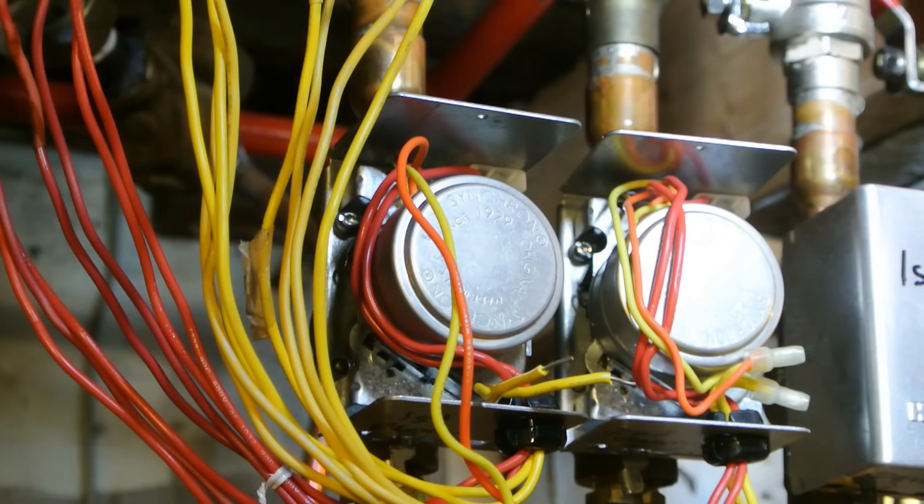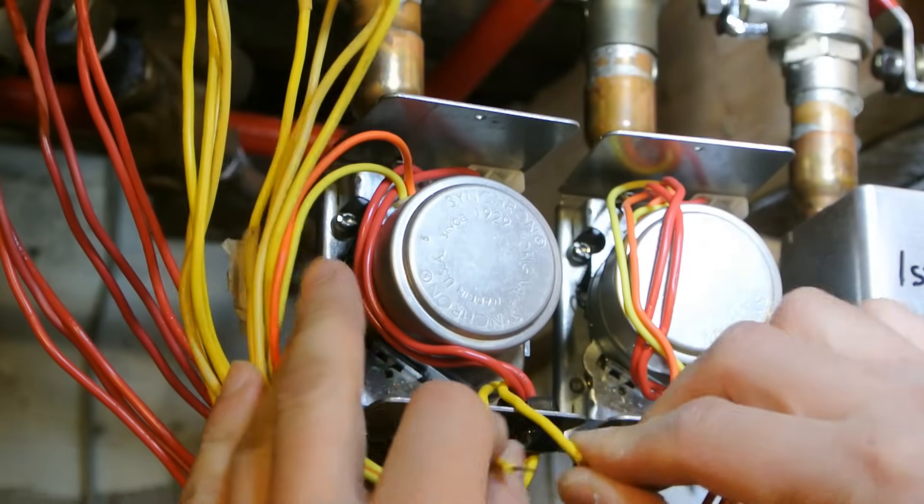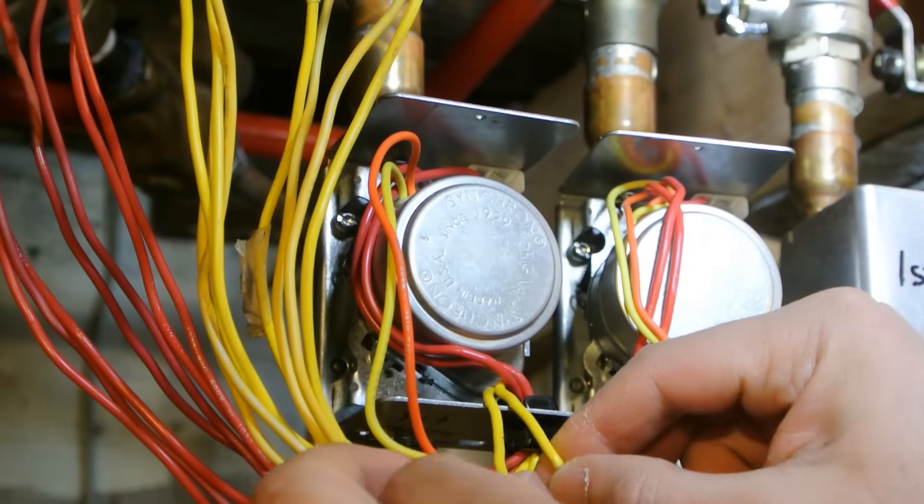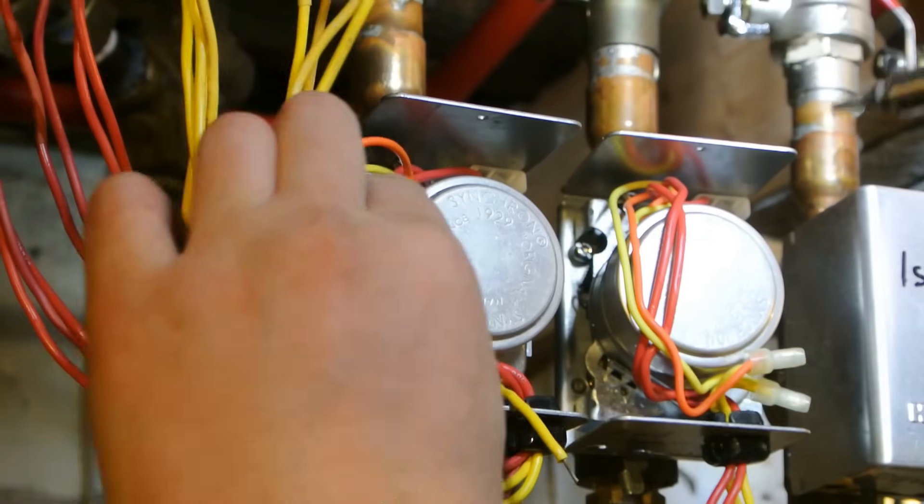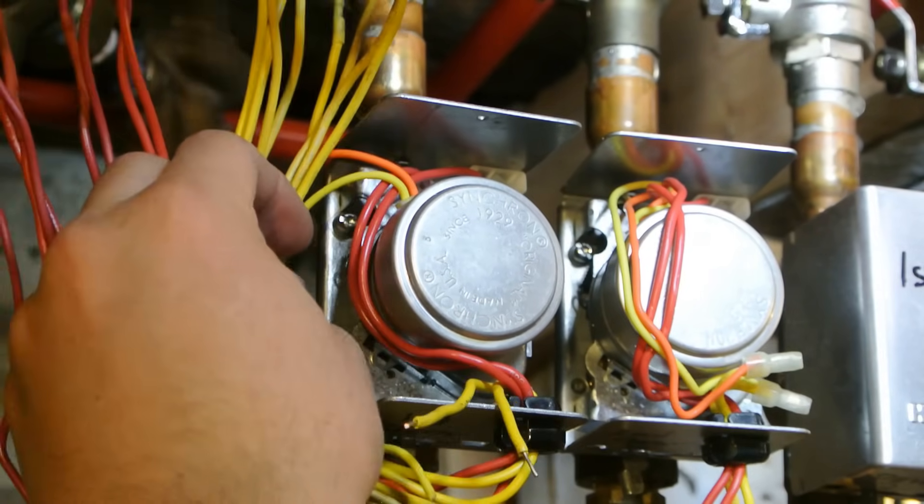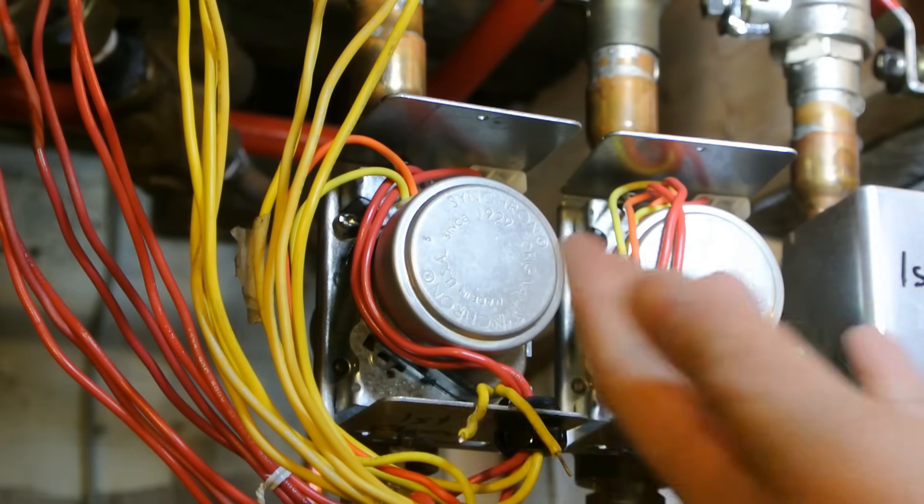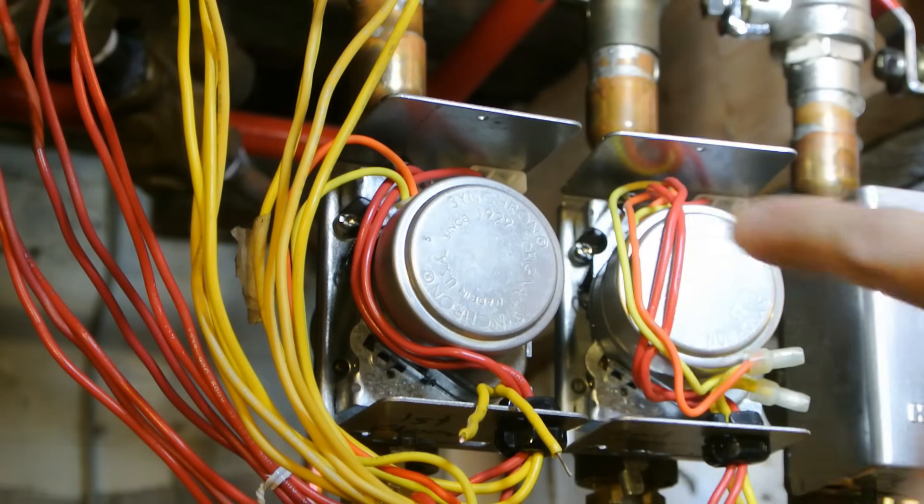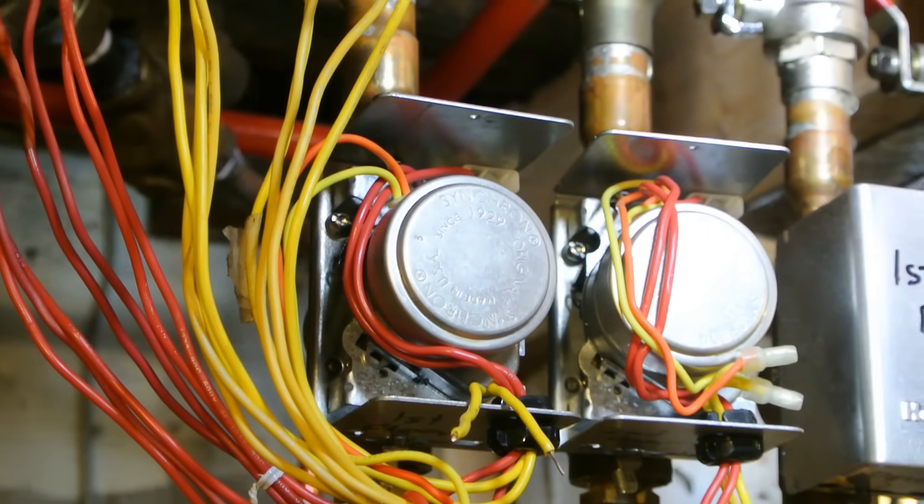So these two wires go to the boiler system itself, or I should say to an actual 24 volt source. Now we're going to remove the valve itself. Typically why these fail, why mine's failing, it's working intermittently. But what's happening is it's not hitting the end switch and causing the boiler to fire.